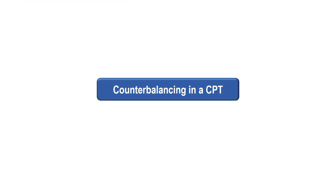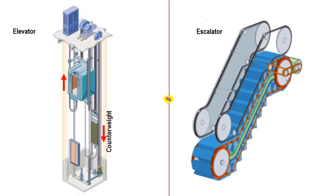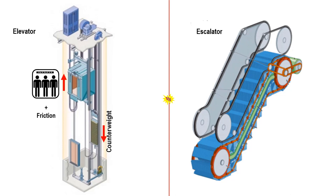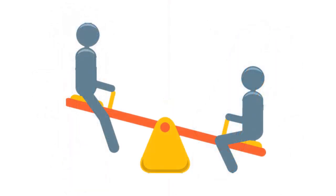Let us look at the principles of counterbalancing in a CPT. The four types of CPTs are classified by the movement of its cabins or train coaches. It will be easier to understand each type if we associate its movements with equivalent machines that we see every day. These two machines are an elevator and escalator. Both devices rely on the principle of counterbalancing. In an elevator, because of the equal weight of the cabin and the counterweight, the energy required to transport the passengers is just the weight of the passengers plus friction. In an escalator, because of the equal weight of the stairs going up and the stairs going down, the energy required to transport the passengers is just the weight of the passengers riding on the stairs plus friction. The principles of counterbalancing in an ART can be best explained by looking at the simplest counterbalancing device we often see — a seesaw.